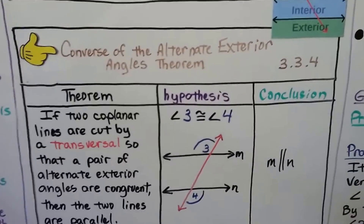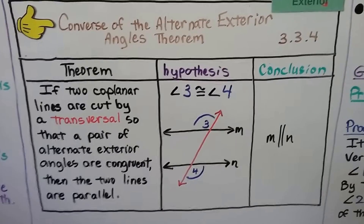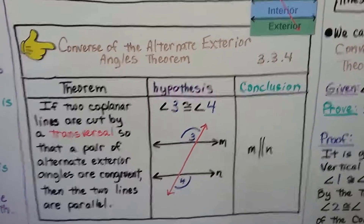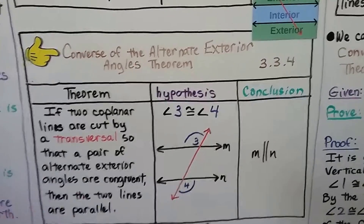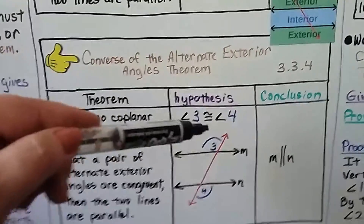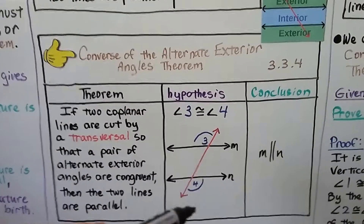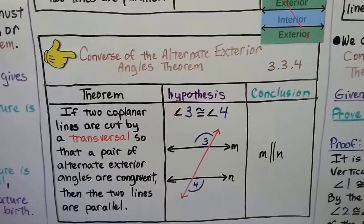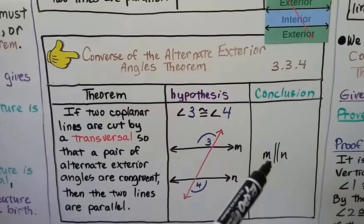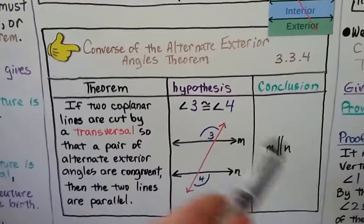Here's the converse of the alternate exterior angles theorem: if two coplanar lines are cut by a transversal so that a pair of alternate exterior angles are congruent, then the two lines are parallel. We've got angles 3 and 4 — they're on opposite sides of the transversal and on the exterior of the two lines, so they're alternate exterior angles. If these two angles are congruent, then m is parallel to n. We flipped it around: because they're congruent, those lines are parallel.